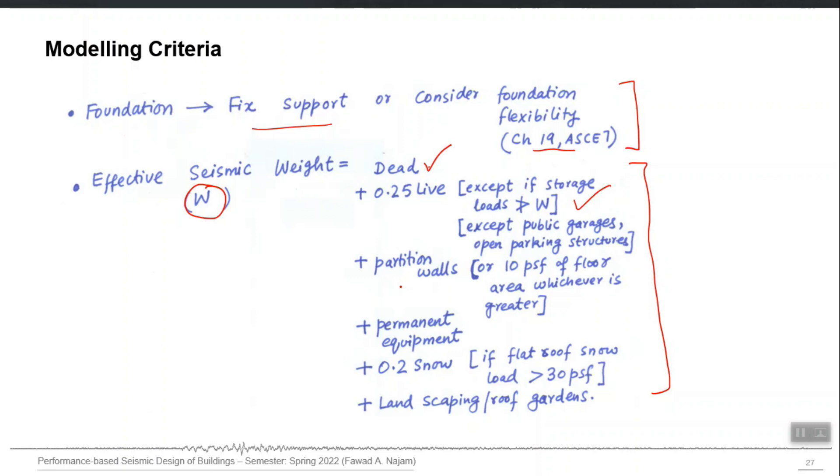The load of partition walls should be included in the seismic weight, any permanent equipment, some part of the snow load if there is possibility of snow loading, and if there is landscaping or roof gardens, the load of those elements should also be included in the seismic weight.